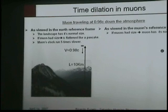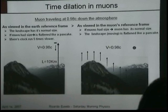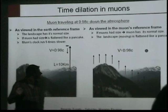Now, how does the muon see that? In the reference frame of the muon, if you were coming down with the muon, you would see that the muon has its normal size. The landscape now is moving, but the landscape, since it's moving, is flattening like a pancake.